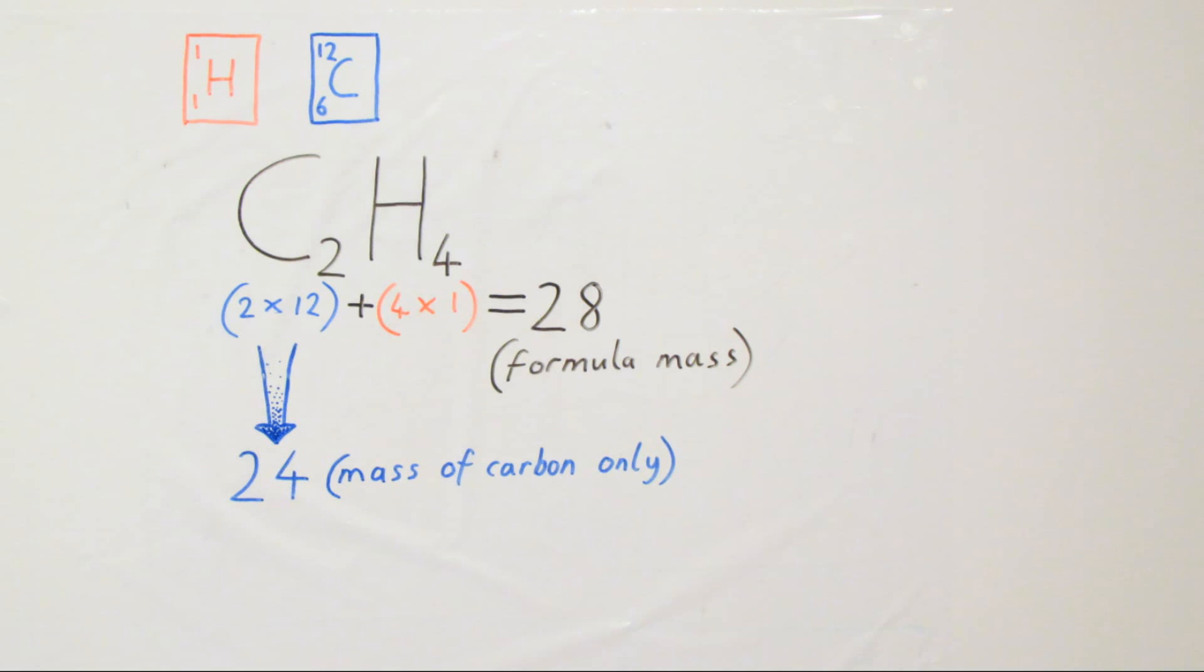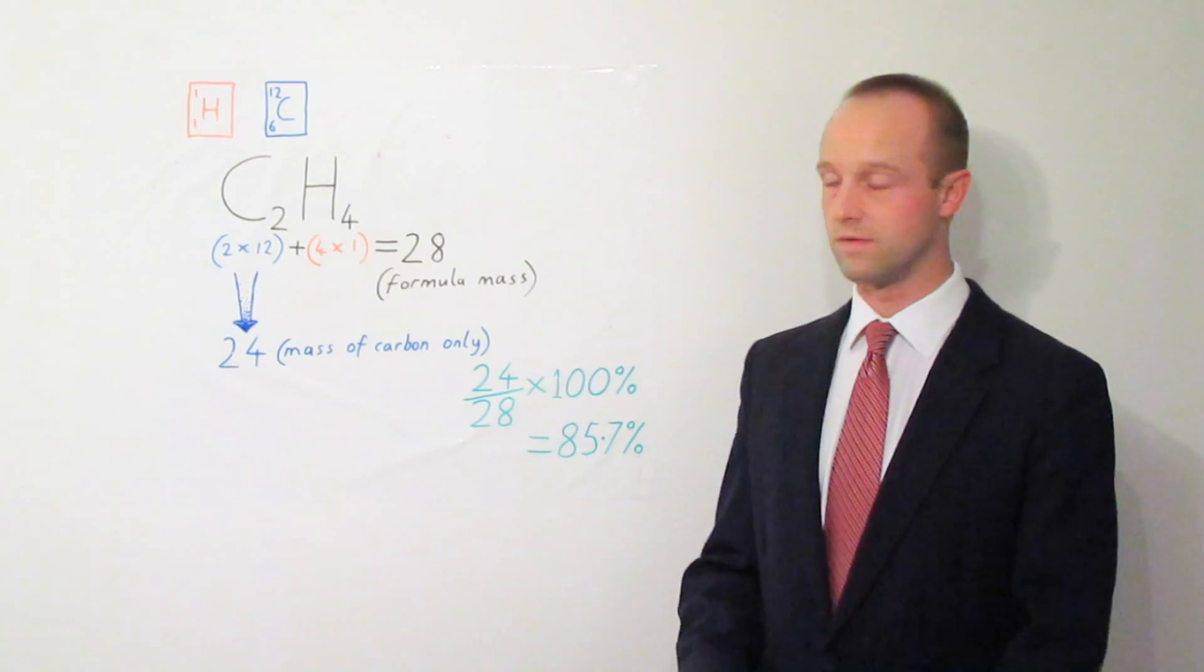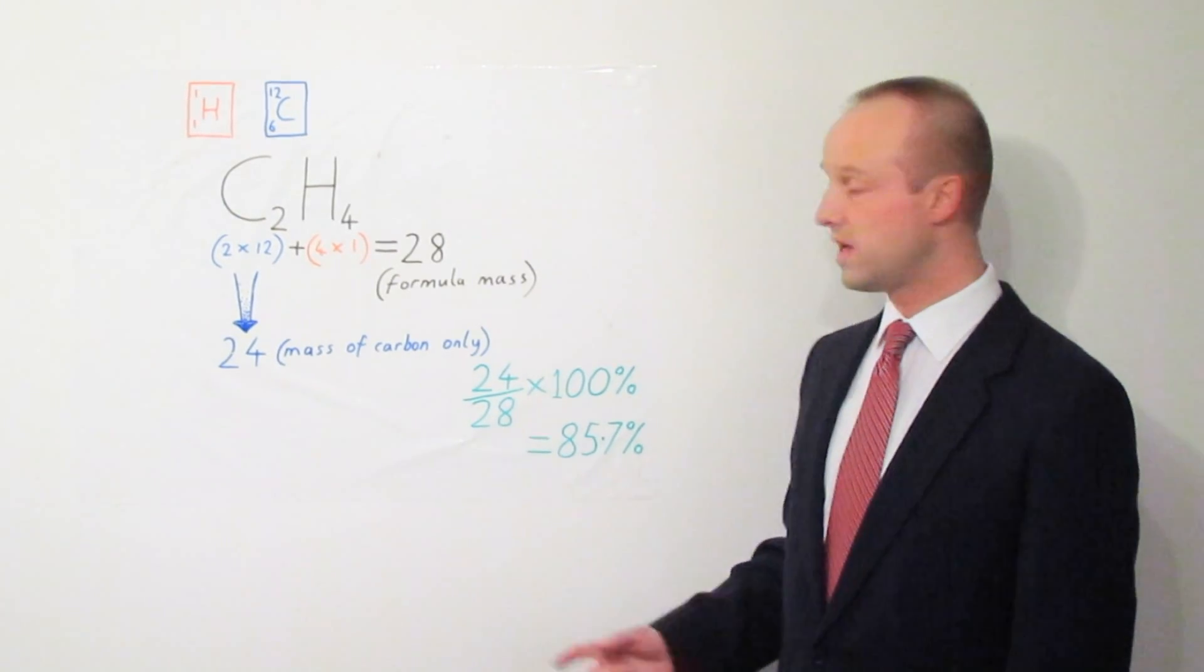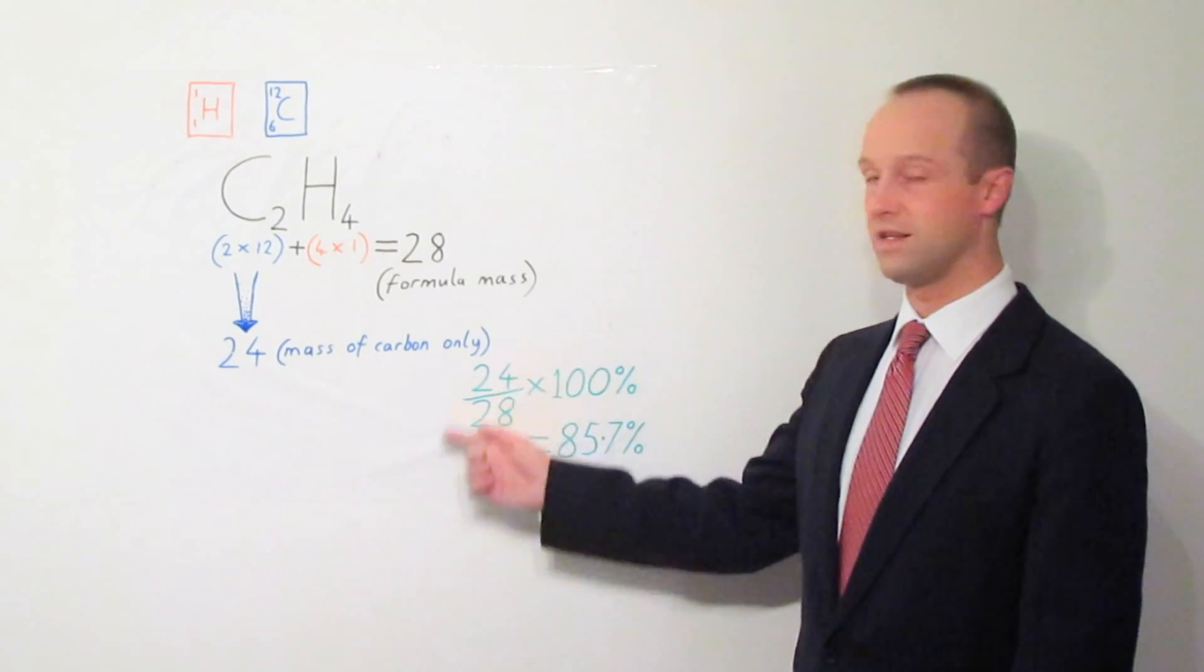To work out our percentage, remember it's the small number divided by the large number. In this case, 24 divided by 28. You then multiply that by 100%, and if you check this on your calculator to make sure you can do it properly, you should get an answer of 85.7%. And that's all there is to the process of working out a percentage mass.